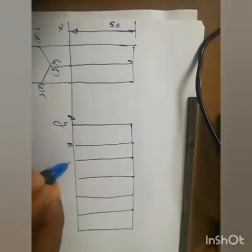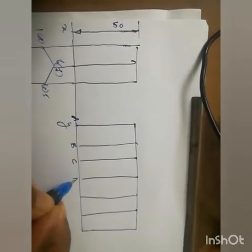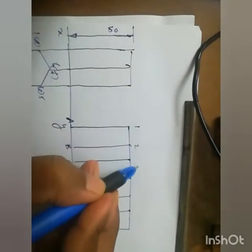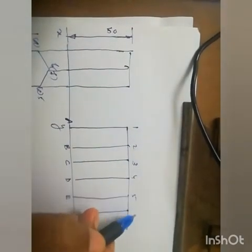This is A, B, C, D, E, F and A. And this is 1, 2, 3, 4, 5, 6, 1.